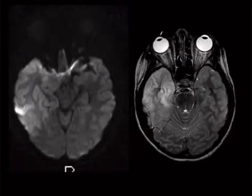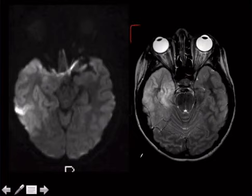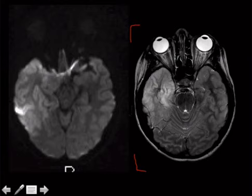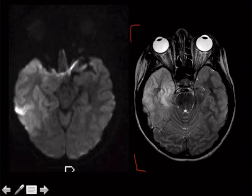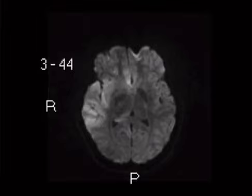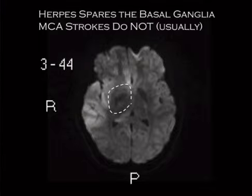What if you see the T2 first and it's the temporal lobe — you immediately think herpes, right? But it's also restricting diffusion. That shouldn't mess you up because restricted diffusion is the most sensitive early sign of herpes encephalitis. How to distinguish from MCA infarct: MCA infarcts typically involve the basal ganglia. If the basal ganglia is spared, think herpes. If it's not spared, think MCA infarct.